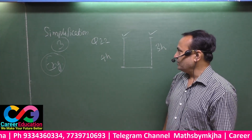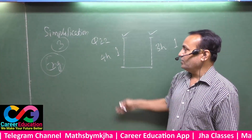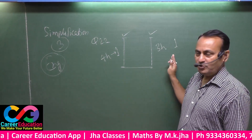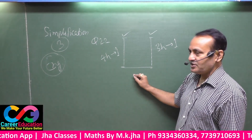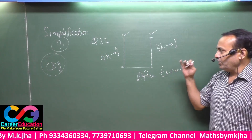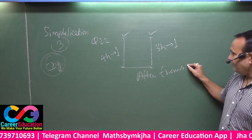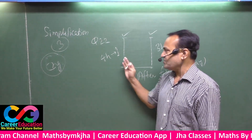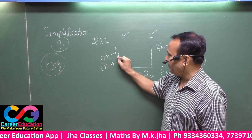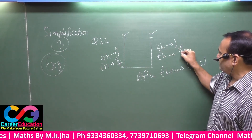We suppose the length of both candles is one unit. The first candle melts completely one unit in four hours, and the second candle melts completely one unit in three hours. Both were lighted at the same time, and after t hours, the first candle melts t by four units, and in t hours the second melts t by three units.